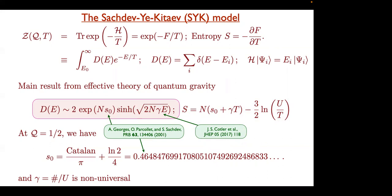To get this sinh factor you need the full Schwarzian action. This sinh factor is actually far more universal — it applies to all kinds of things. It comes from JT gravity. I don't know of any other way to do it; that's the way everyone has done it. Even on the condensed matter side, the Liouville quantum mechanics approach gives it to you, but that's basically gravity.